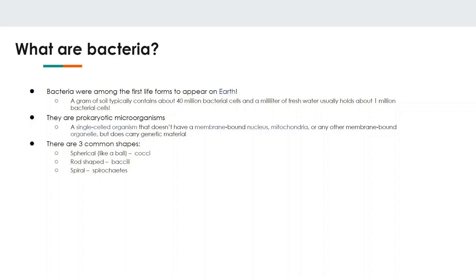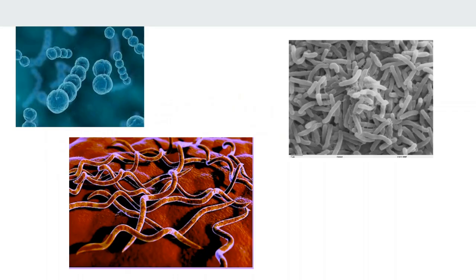Depending on how bacteria are arranged, they can be in chains — which would be 'strepto' — and then whatever the shape is. Or in clusters — 'staphylo' — and then whatever the shape is. So a cluster of spherical-shaped bacteria would be staphylococcus. A chain of bacilli bacteria would be streptobacillus. That's how that works.